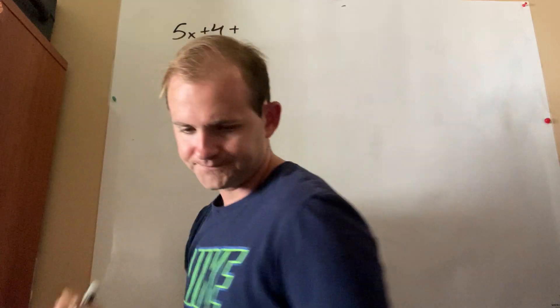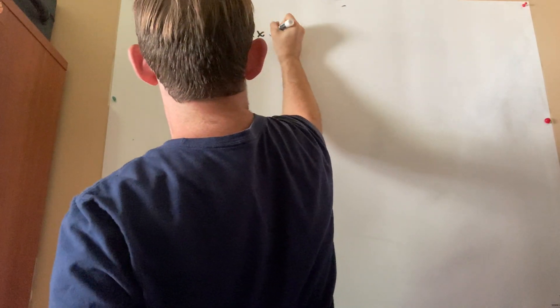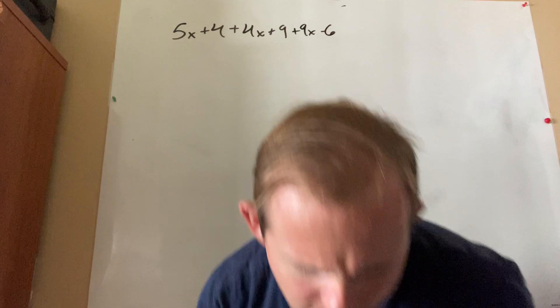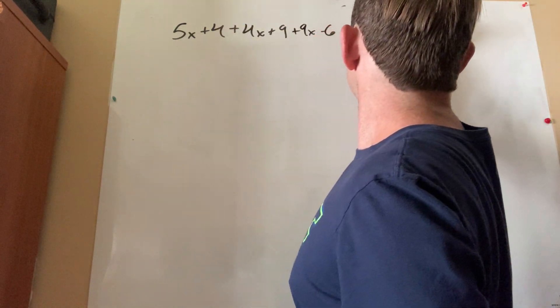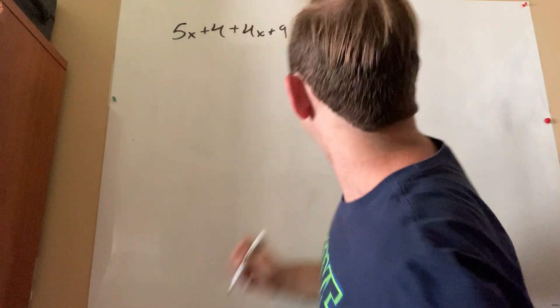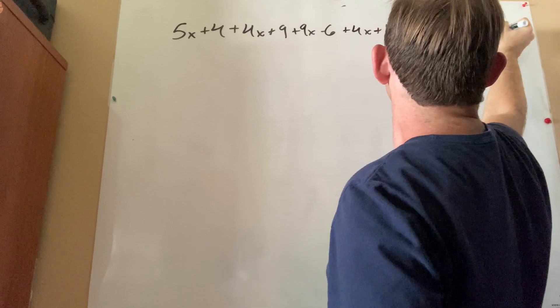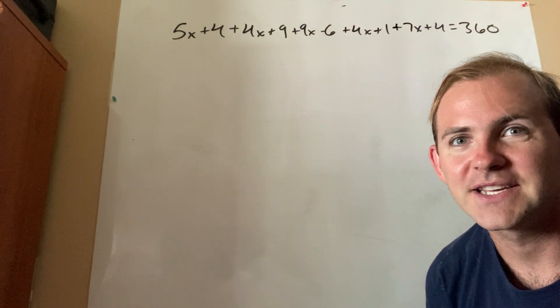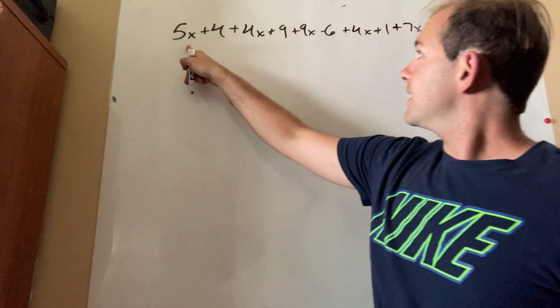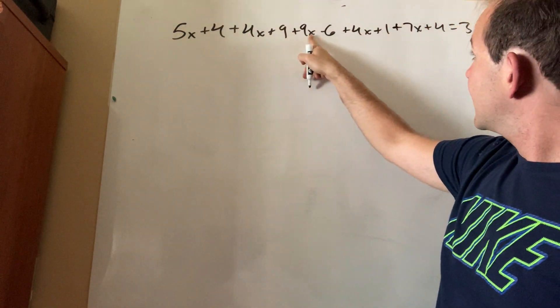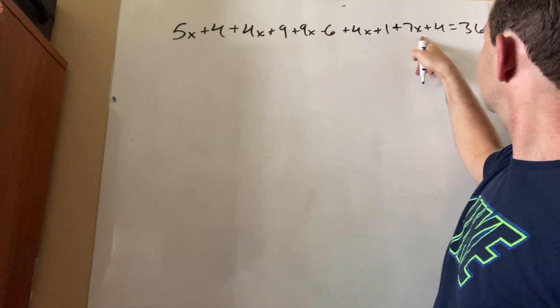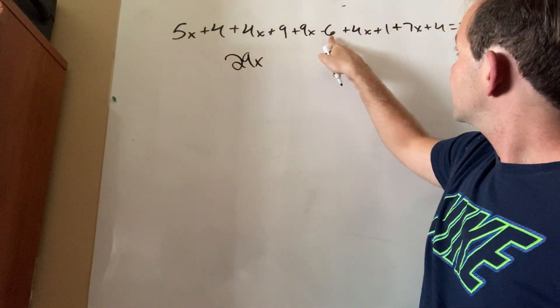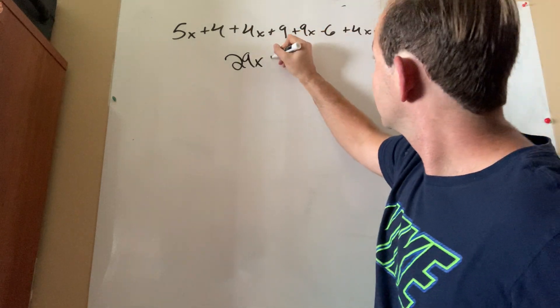So, 5x plus 4, plus 4x plus 9, oh my gosh, so many angles, plus 9x minus 6, plus 4x plus 1, oh my god, I'm running out of space, plus 7x plus 4. There we go. Equals 360. I'll move my ugly old head so you guys can see that equation. Again, guys, literally, it's just combining like terms. 5x, 4x make 9x, 9x and 9x make 18x, plus 4x is 22x, plus 7x is 29x. Now, let's deal with the constants. 4 and 9 make 13, 13 minus 6 is 7, 7 plus 1 is 8, 8 plus 4 is 12.